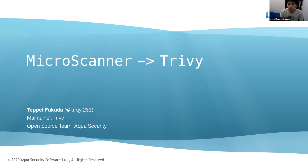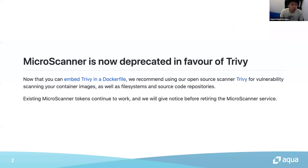I will be talking about end-of-life of Microscanner. Recently we announced that Microscanner is now deprecated in favor of Trivy. Trivy can now be embedded in the Dockerfile, and we recommend using our open-source scanner Trivy for vulnerability scanning. I'll explain the details and how to use Trivy instead of Microscanner.